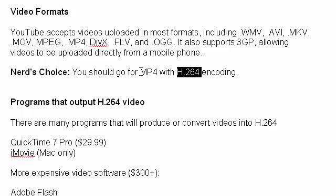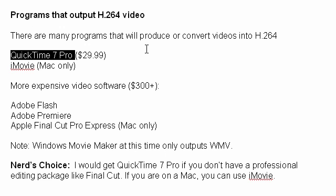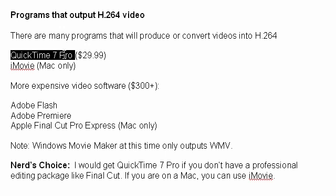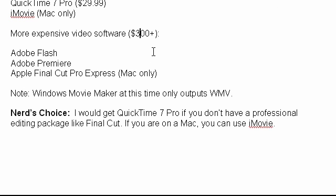So what programs output MP4 with H.264? There are many out there. At the top of my list is QuickTime 7 Pro made by Apple, which allows basic video editing and outputs in H.264 format — it costs $29. If you have a Mac you can use iMovie. For more serious video work you may want Adobe Premiere or Apple's Final Cut Pro or Final Cut Pro Express.